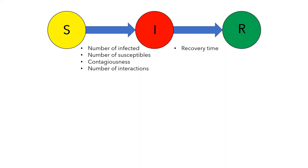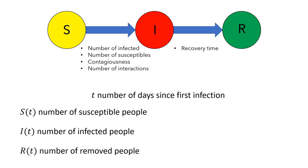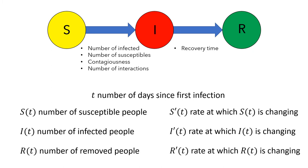We looked at four quantities. T was the number of days since the first infection, S was the number of susceptible people, and since this number could vary as the number of days increased, we wrote S(t). Then I was the number of infected people, and R was the number of removed people. We also looked at rate equations, and wrote S' to represent the rate at which S was changing, I' to represent the rate at which I was changing, and R' to represent the rate at which R was changing.